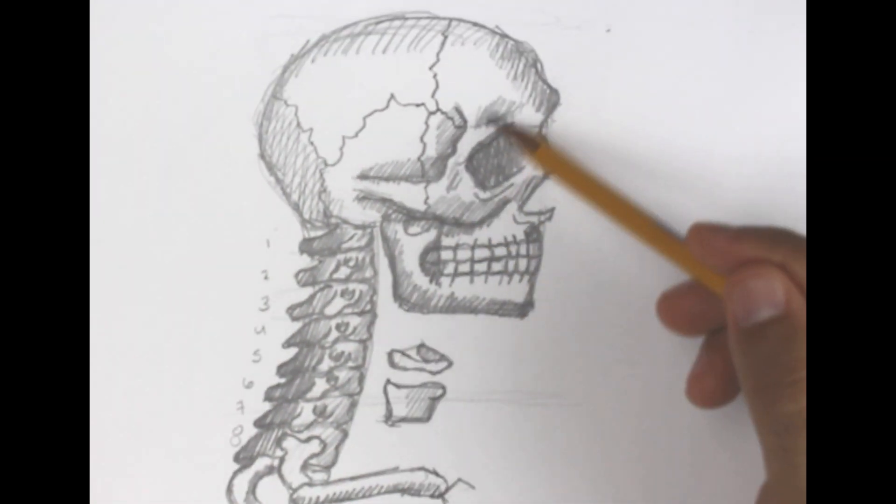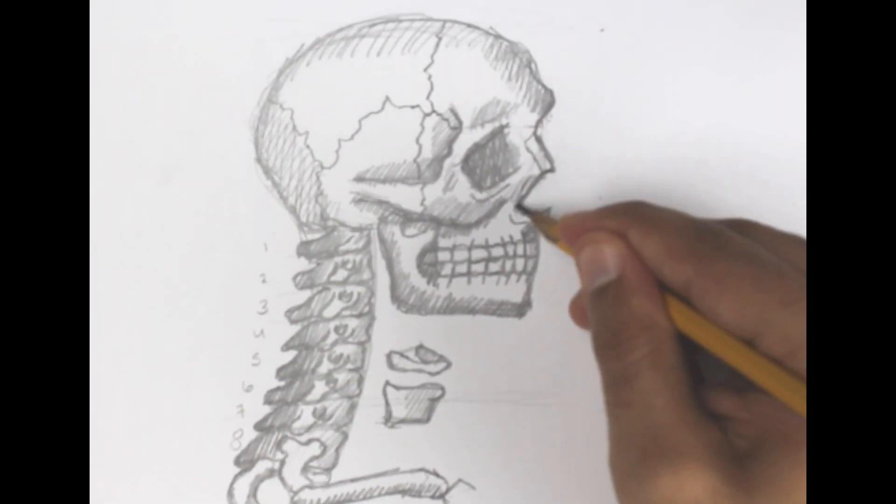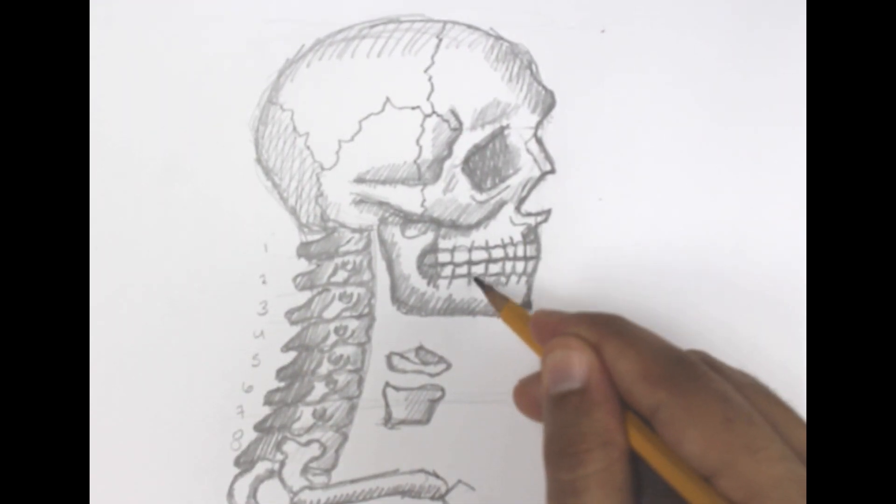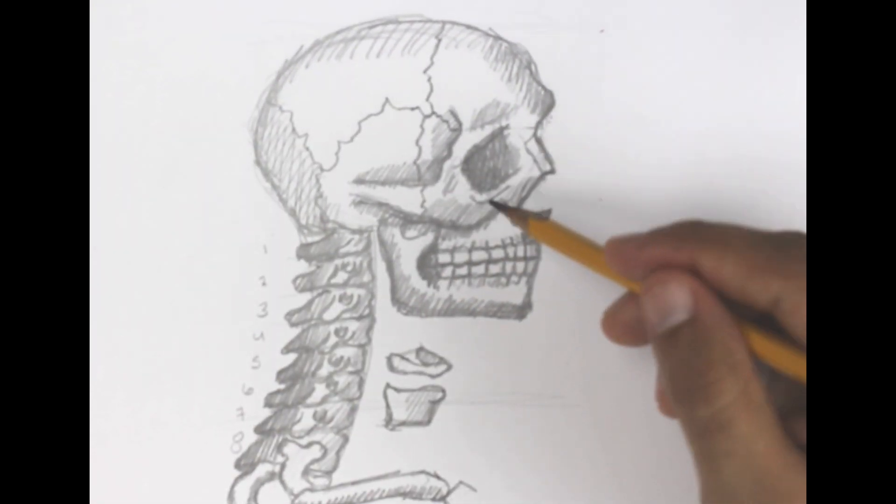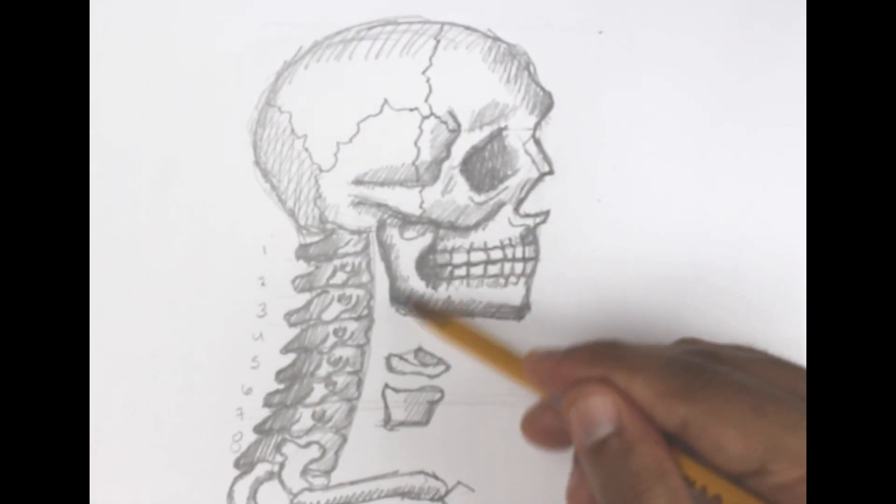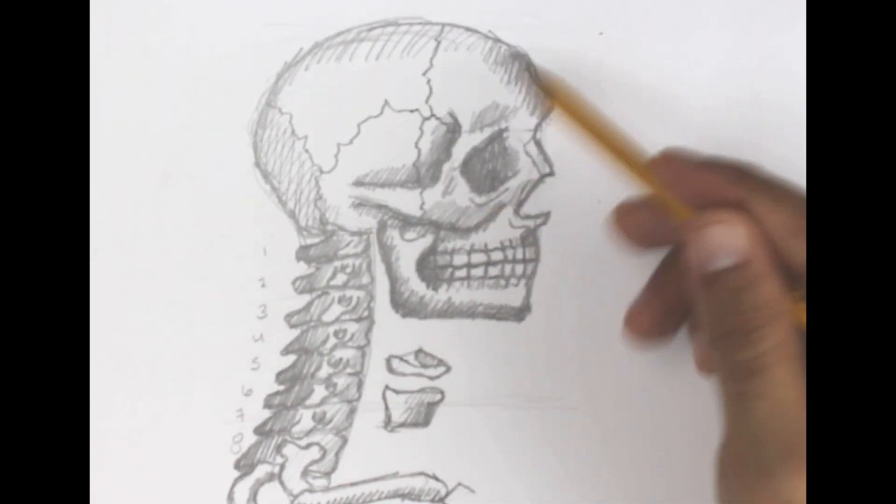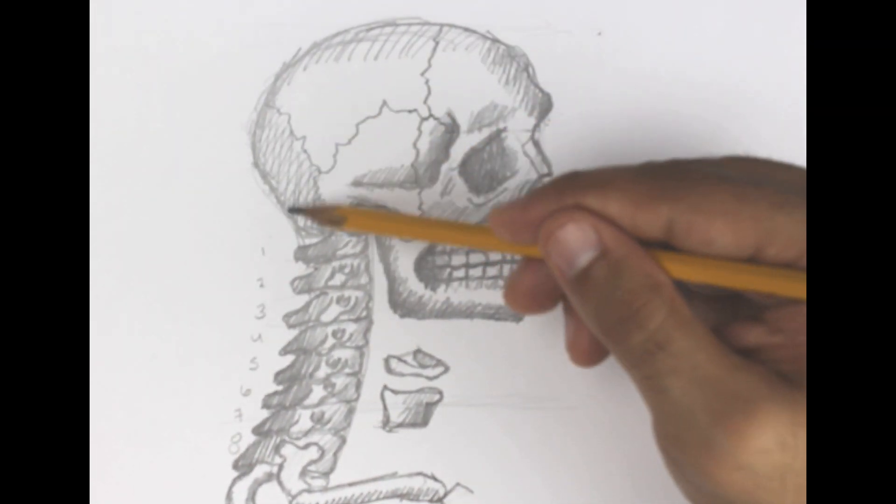You want to make sure that's a little bit darker to show that there is depth there. Of course towards the end of the teeth as well, and between the teeth and between the vertebrae, those are all areas that can be darker.